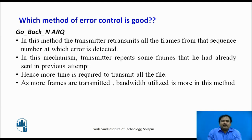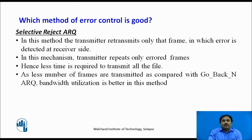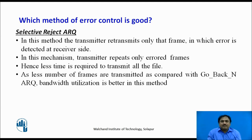In the Go-Back-N method, the transmitter repeats some frames it already sent on the channel. Hence, this method requires more frames to transmit the entire file, and because more frames are being sent, it also requires more bandwidth on the network. In contrast, in Selective Reject ARQ, the transmitter only retransmits frames that are in error and does not repeat any additional frames. Hence, less time is required to transmit the entire file, and less bandwidth is required due to fewer frames being transmitted.